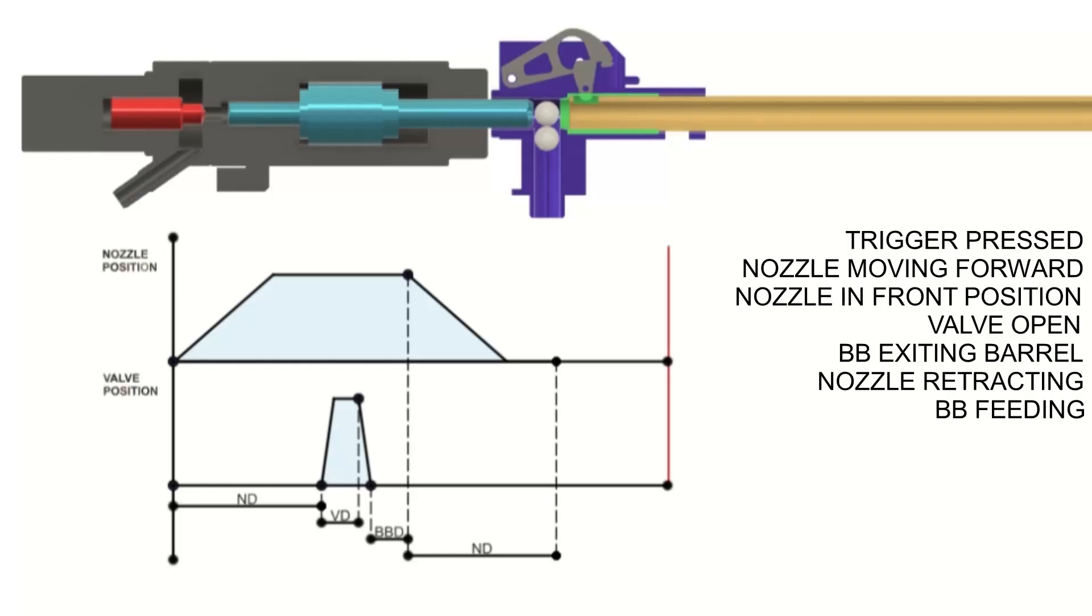However, if the rate of fire setting is low, then the cycle time will be higher and BB will have more time to be loaded inside the chamber.